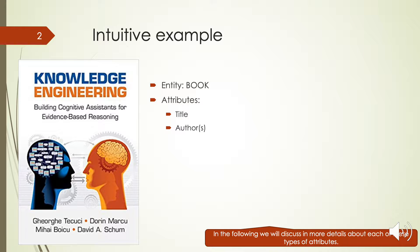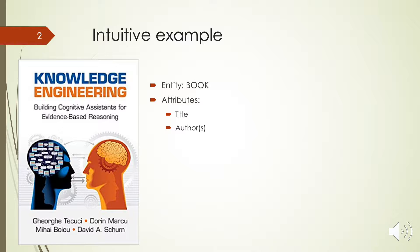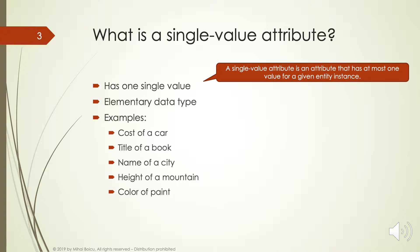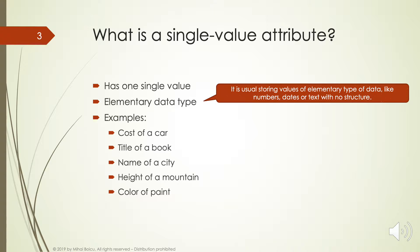In the following, we'll discuss in more detail about each of these types of attributes. A single-value attribute is an attribute that has at most one value for a given entity instance. It usually stores values of elementary data types like numbers, dates, or text with no structure.